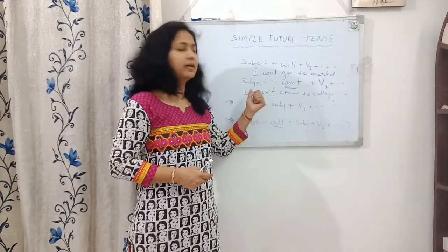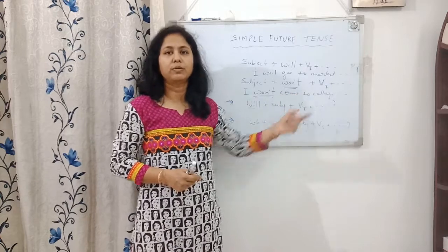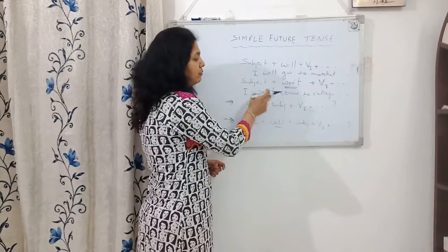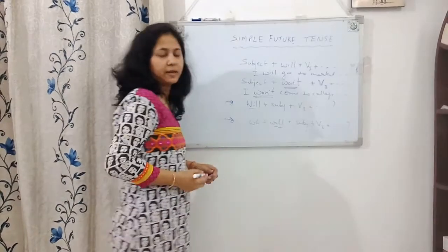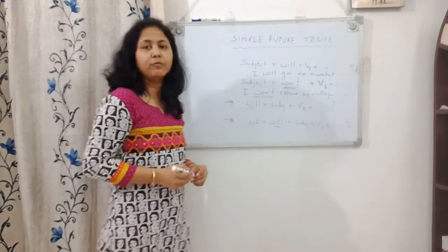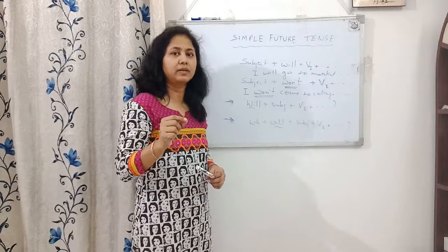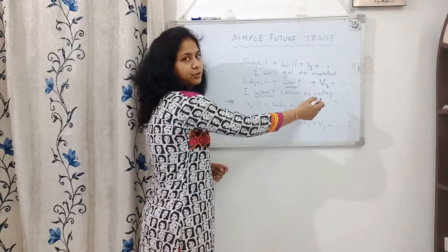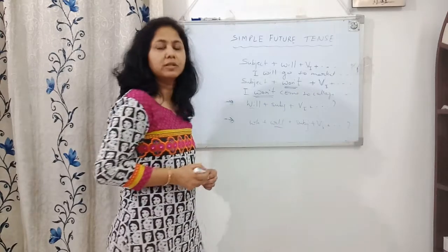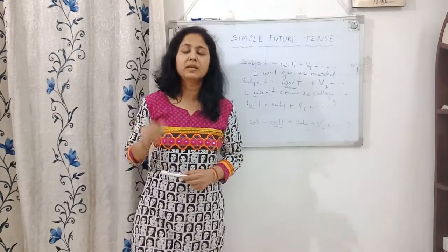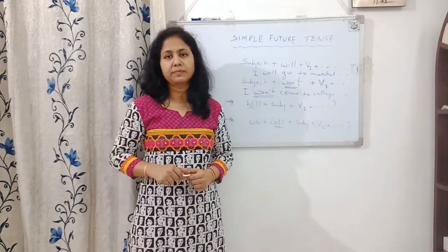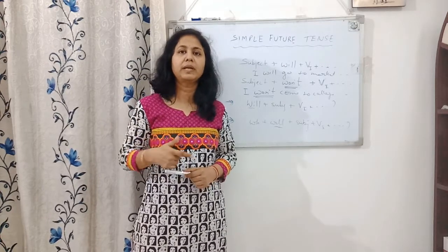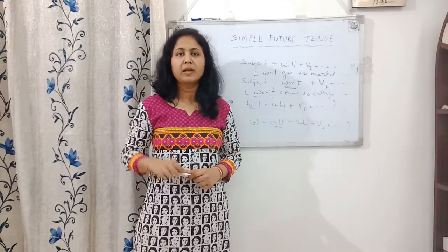To make negative sentences in the future, you can use 'will not.' For example: I will not go to college tomorrow. And one more thing — whenever you want to write 'will not' in contracted form, 'will not' becomes 'won't.' For example: I will not come to your place.